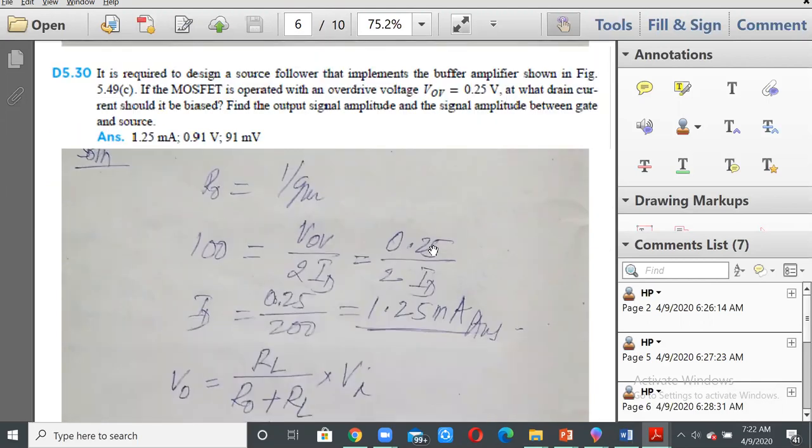So R naught is equal to 1 by gm, and gm itself is 2ID by VOV. So 1 by gm will become VOV by 2ID. R naught is 100 ohms and VOV is 0.25, so ID will be equal to 0.25 divided by 200, that will be 1.25 milliamperes.